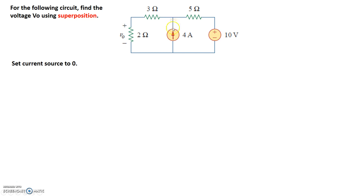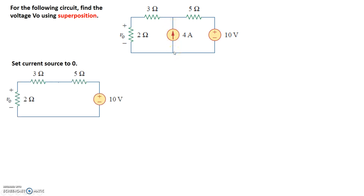In other words, this whole branch right here goes away, and the circuit looks like this. Here's the voltage source, and the current source has disappeared. With no current source, we have a 5 ohm resistor, a 3 ohm resistor, and a 2 ohm resistor — that's all we have.